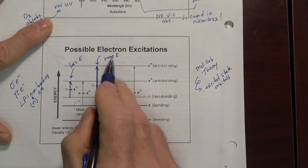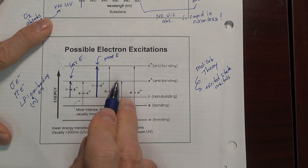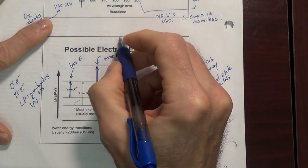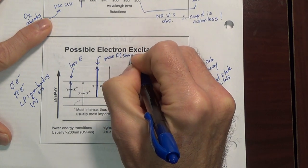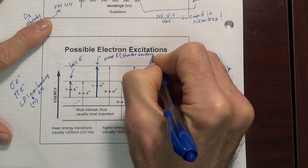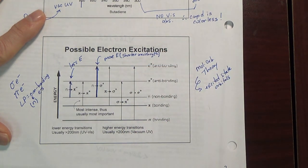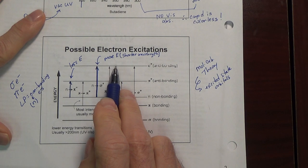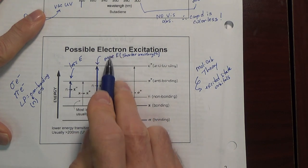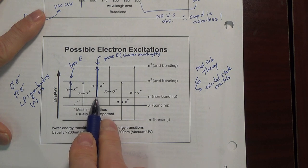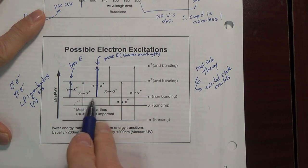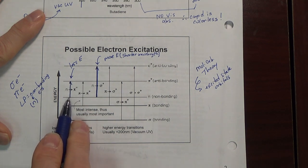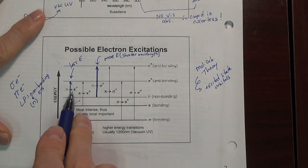In terms of type of light — everything is quantized — you need higher energy light for higher energy transitions, and thus shorter wavelength. Shorter wavelength light would promote an electron being excited to a sigma star orbital. Comparatively, longer wavelength light would drive this other excitation — a lone pair electron to a pi star orbital.